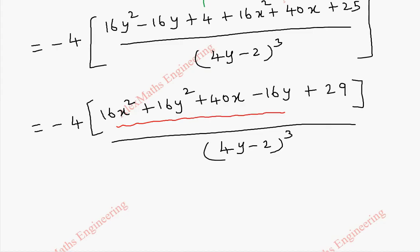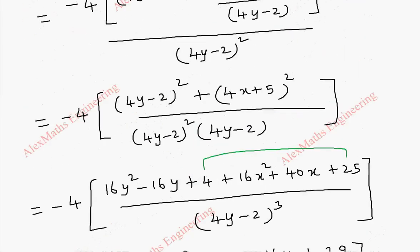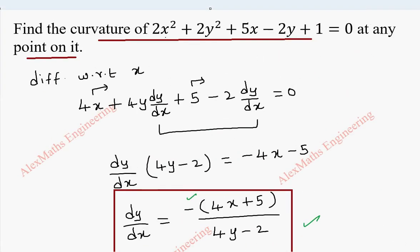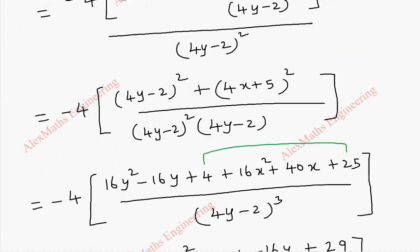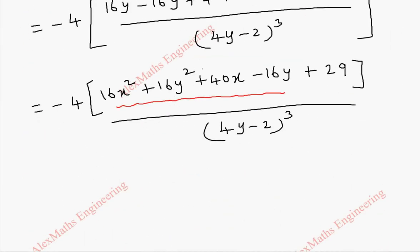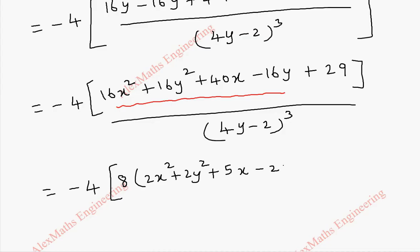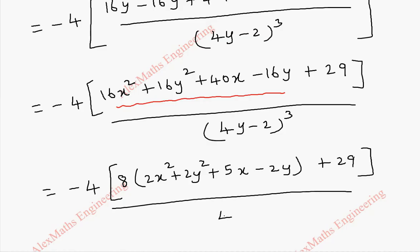Now we are going to rearrange the terms: 16x², plus 16y², plus 40x, minus 16y, and combining constants 4 and 25 gives 29. Whole division by (4y minus 2) whole cube. Throughout the expression it is possible to take 8 common. When I take 8 common: minus 4 into 8 into (2x² plus 2y² plus 5x minus 2y) plus 29, divided by (4y minus 2) whole cube.